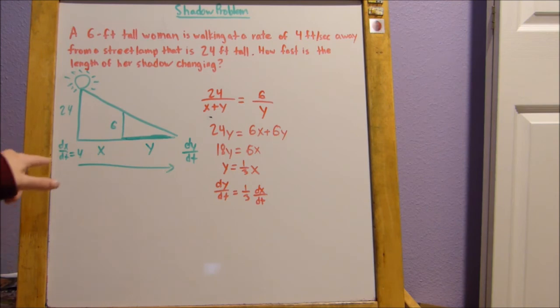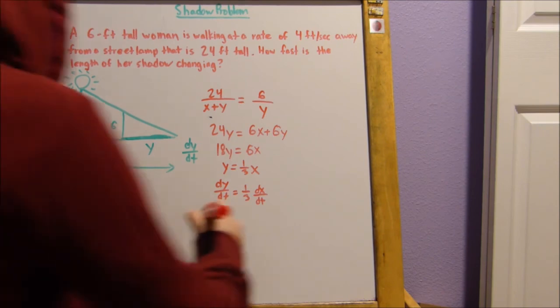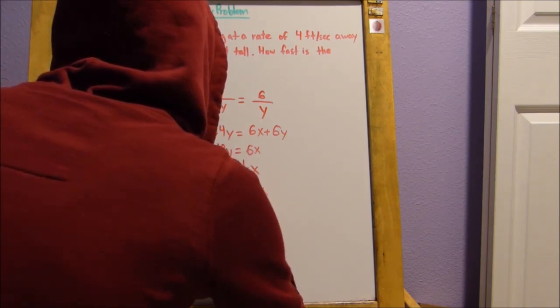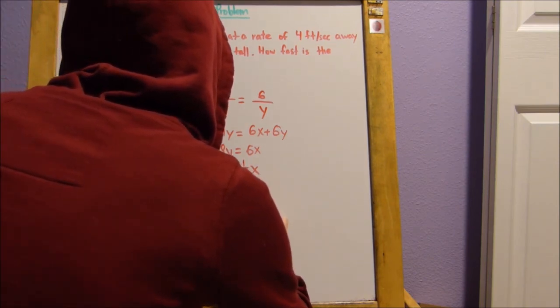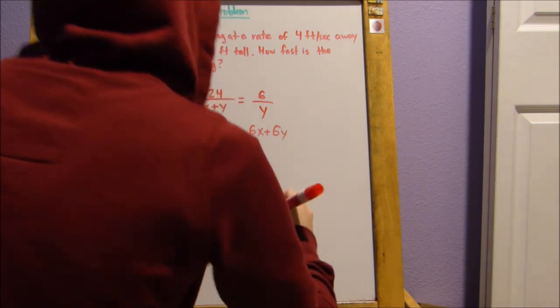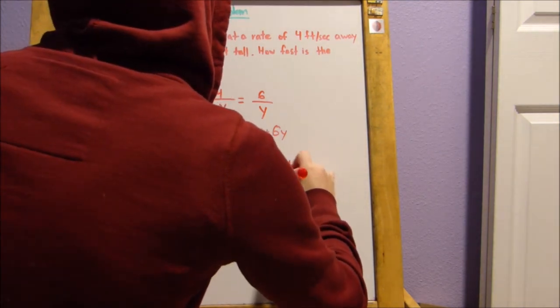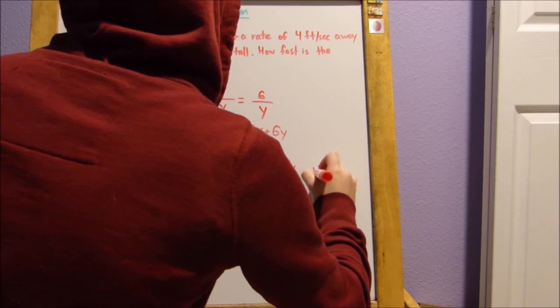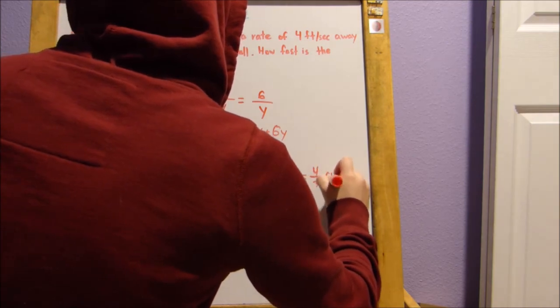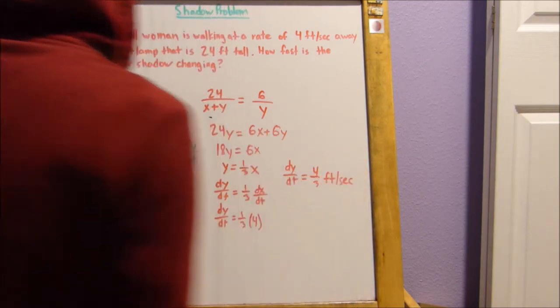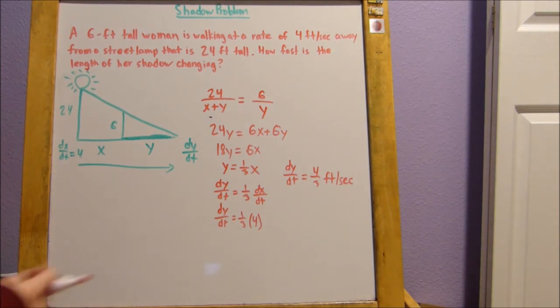Right. So this is the part where we can plug in our dx over dt and solve for dy over dt. So we get dy over dt equals 1 third times 4. So now, if we just multiply, we get dy over dt equals 4 thirds feet per second.